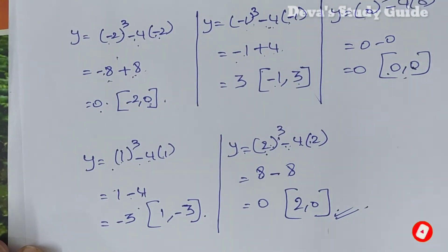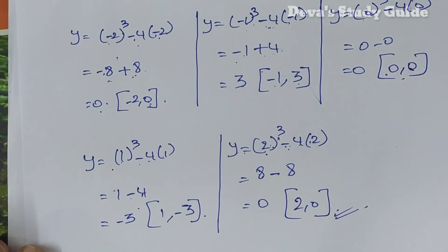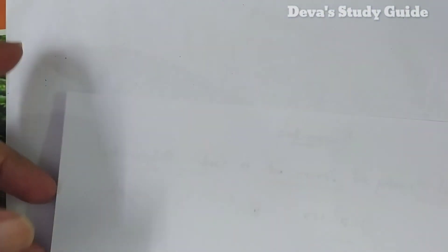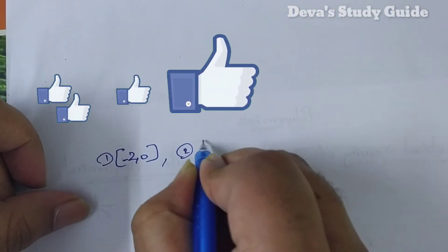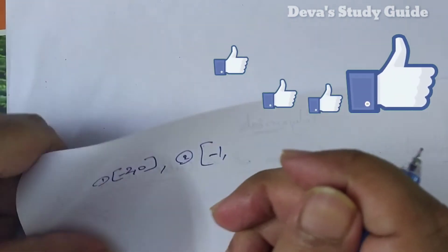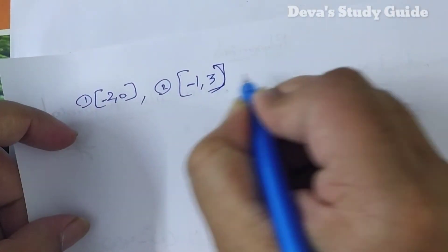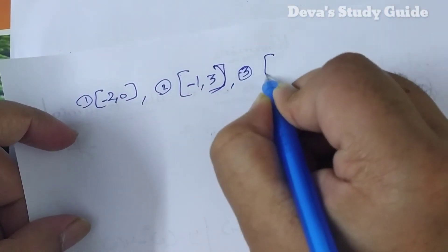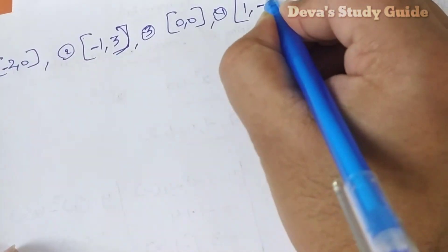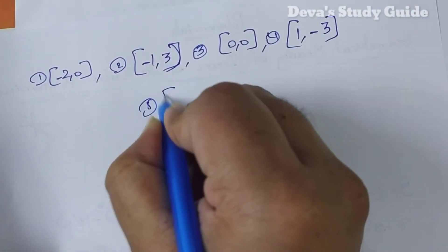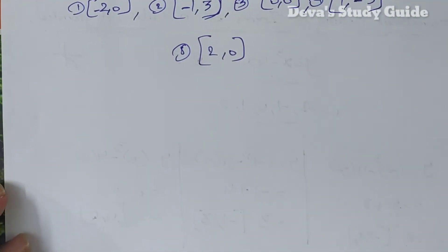Now we draw the graph. The points are: minus 2 comma 0 is the first point. Minus 1 comma 3 is the second point. Zero comma zero is the third point. One comma minus 3 is the fourth point. Two comma zero is the fifth point. Allah, watch this — graph is drawn below.